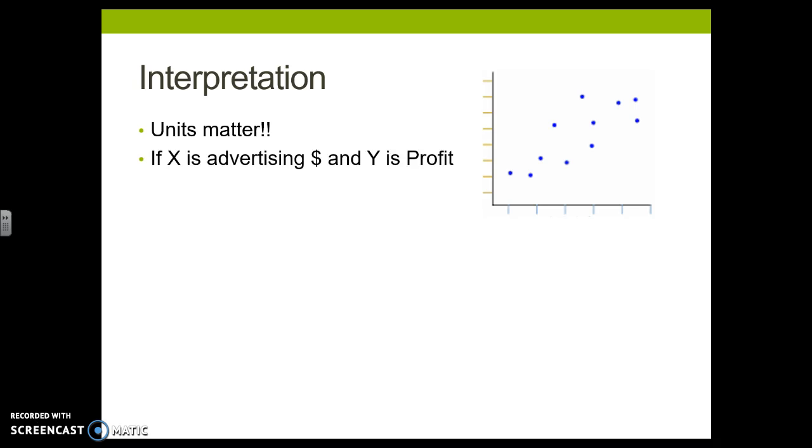For example, if I am using advertising money to predict profit, and I get the same equation. That means if I spend one unit of advertising, I should make seven units of profit. So I'm going to put a one here for X and solve, and I get seven for Y.